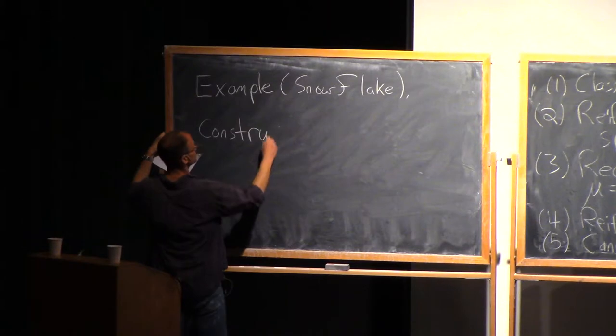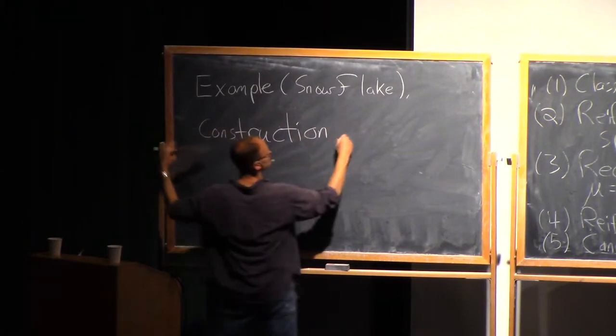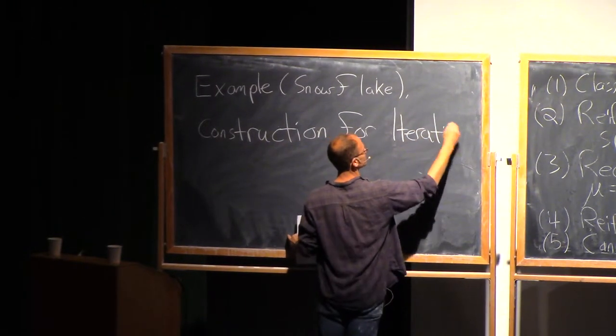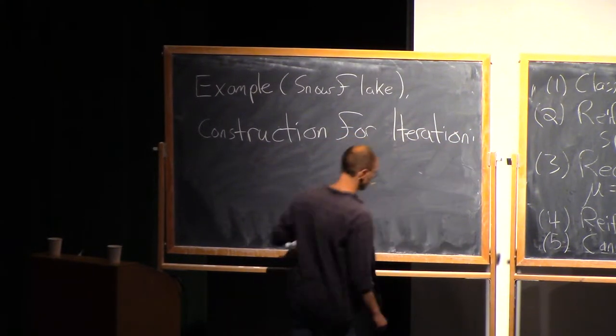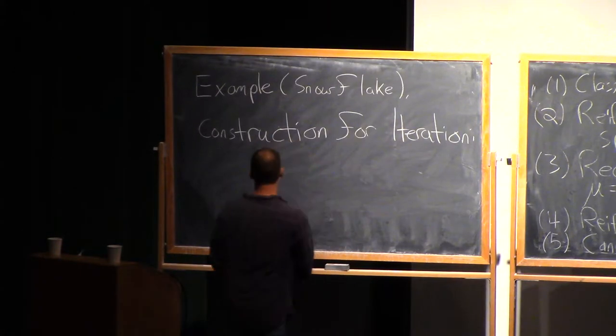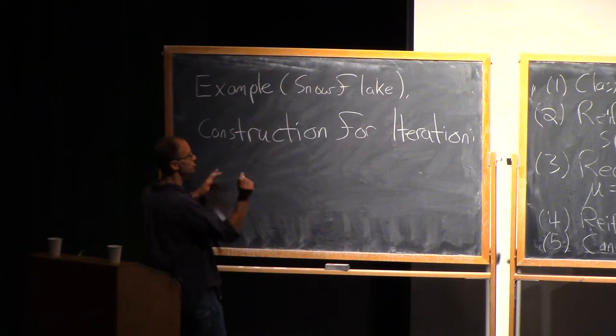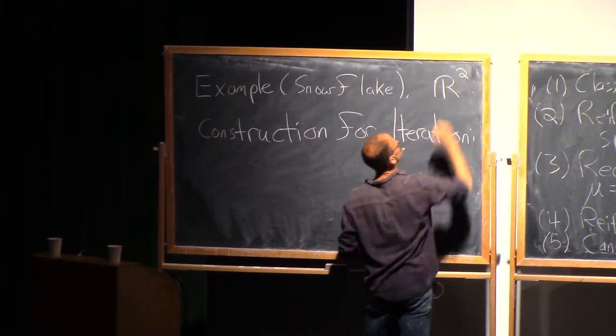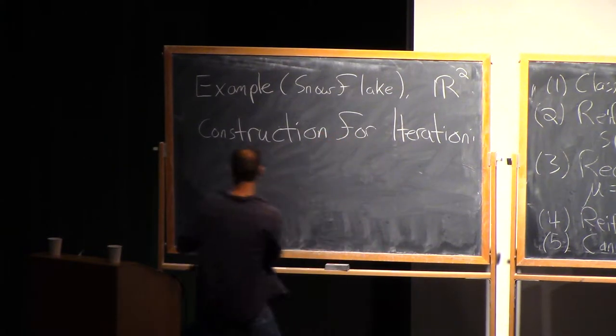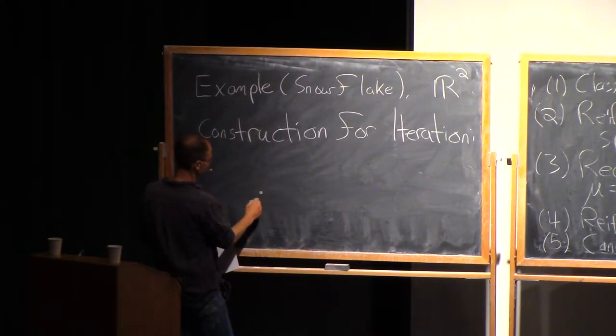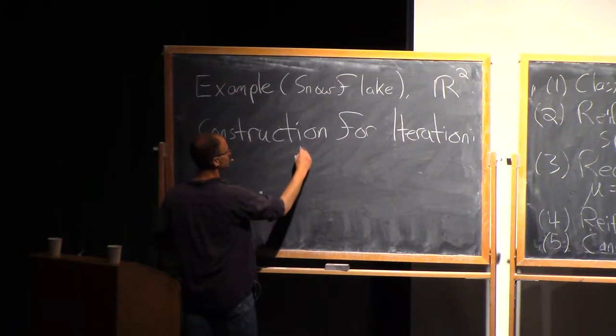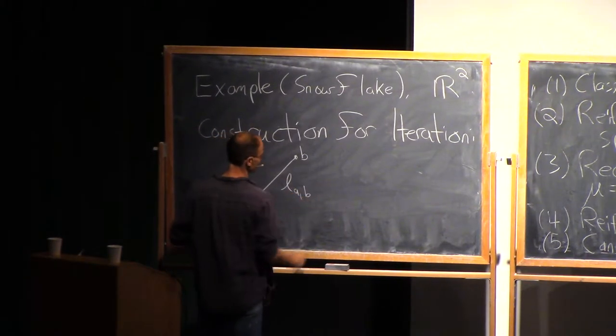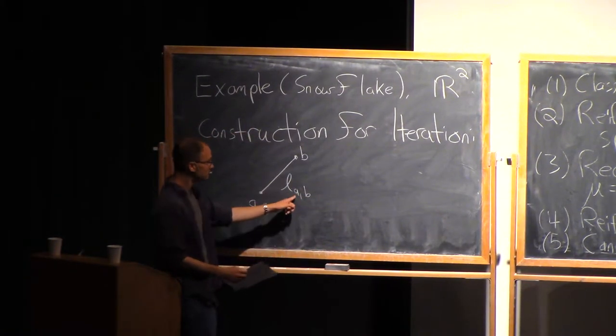It's also going to tell us why these mappings are bi-Holder and not bi-Lipschitz. So example, so-called snowflake. Let's start with an iterative construction. Let me do something stupid. Let's take two—I mean, everything's going to be in R^2 here. So it's going to be a one-dimensional example in R^2. Let me take two points in R^2. I'll call them A and B. Let's consider the segment between them. And let's let little L_0 be, by definition, this thing is the segment between A and B.